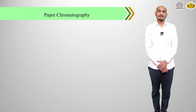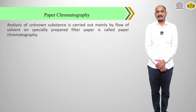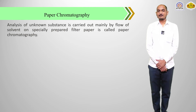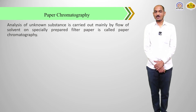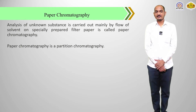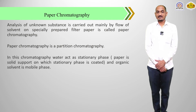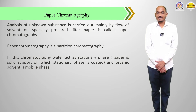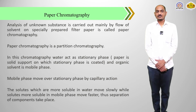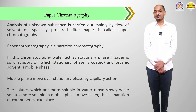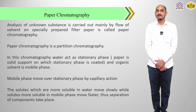The next type of chromatography is paper chromatography. The analysis of an unknown substance is carried out mainly by the flow of solvent on a specially prepared filter paper, and that technique is called paper chromatography. Paper chromatography is a partition type of chromatography in which water acts as the stationary phase and an organic solvent acts as the mobile phase. The mobile phase moves over the stationary phase by capillary action. Solutes more soluble in water move slowly, while solutes more soluble in the mobile phase move faster, thus the separation of components takes place.